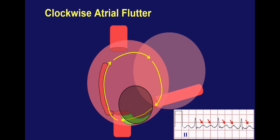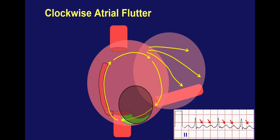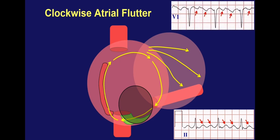On the 12-lead EKG during clockwise right atrial flutter, you'll see flutter waves of opposite direction — positive in the inferior leads 2, 3, and AVF — because the wavefront is traveling downward on the interatrial septum. In a clockwise circuit, communication between right and left atrium occurs over Bachmann's bundle at the top of the chambers, and the wavefront travels in a downward direction in the left atrium as well, giving those positive flutter waves in leads 2, 3, and AVF. The opposite is seen in V1, where flutter waves are negative during clockwise flutter.